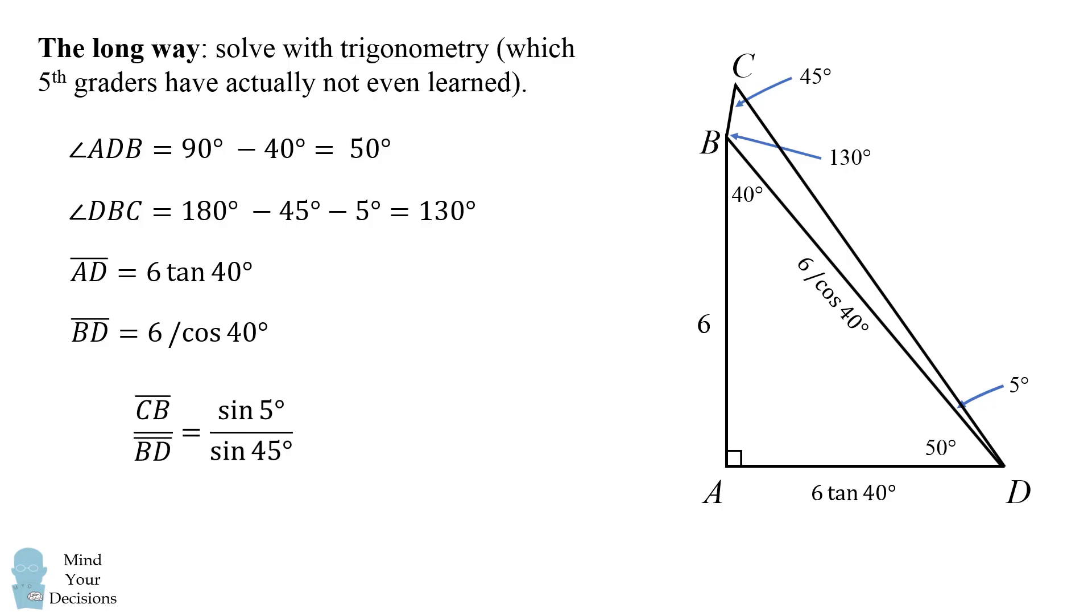We can then use the law of sines to get that CB is equal to 6 divided by the cosine of 40 degrees times the ratio the sine of 5 degrees over the sine of 45 degrees.